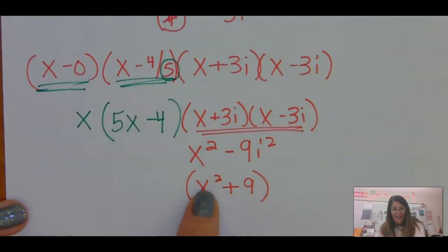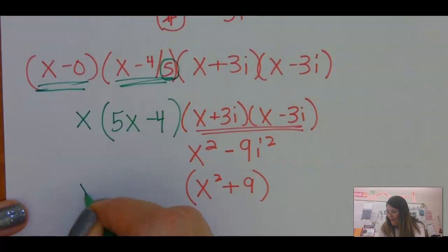Think about it. If I solve that, x squared equals negative 9, I take the square root, and I would get plus or minus 3i. Okay, all of that and this.